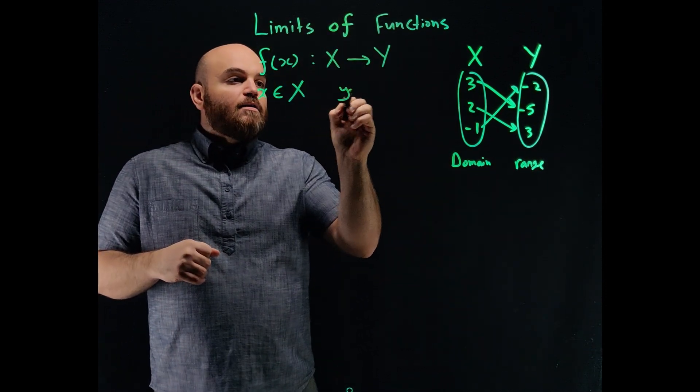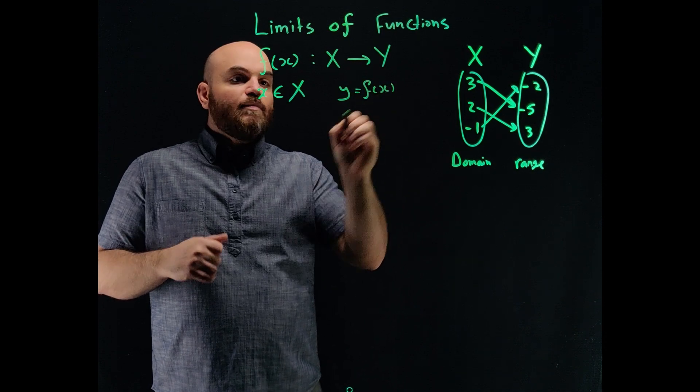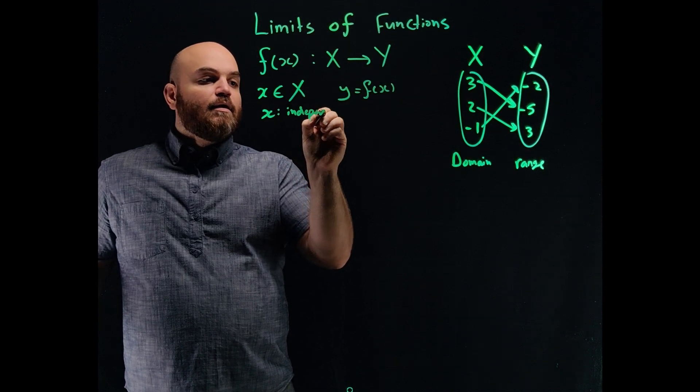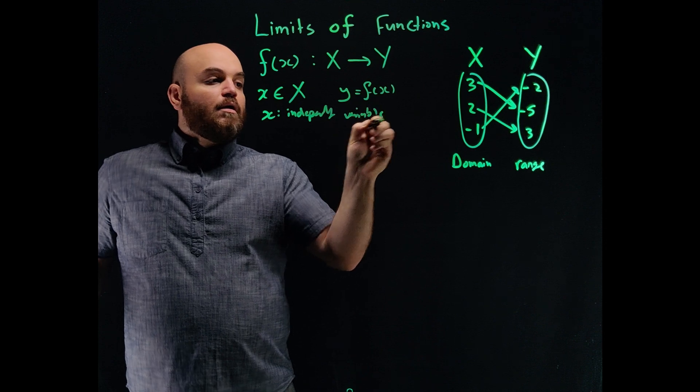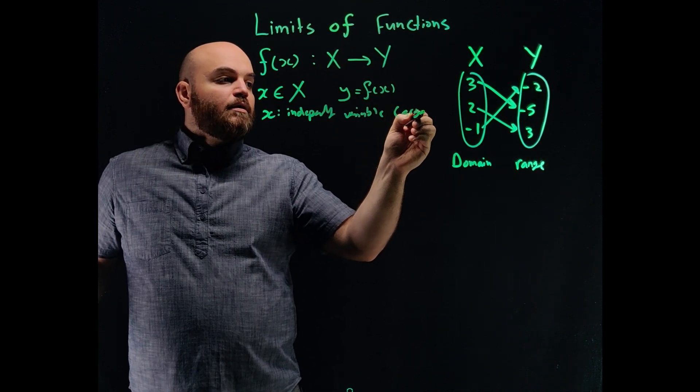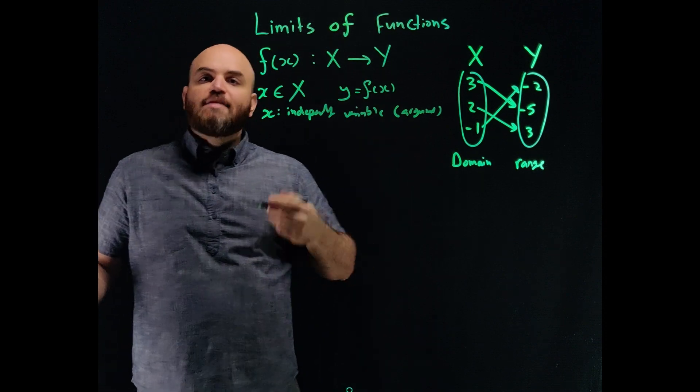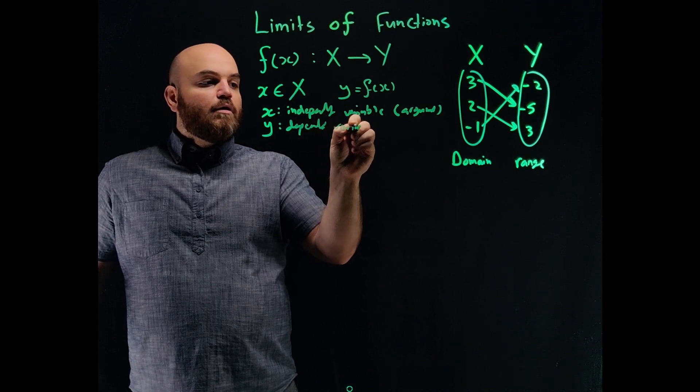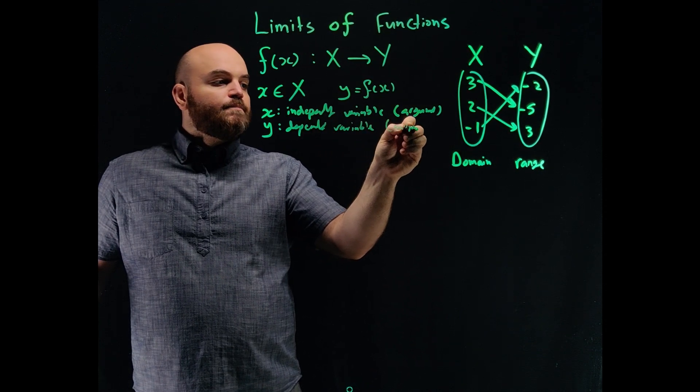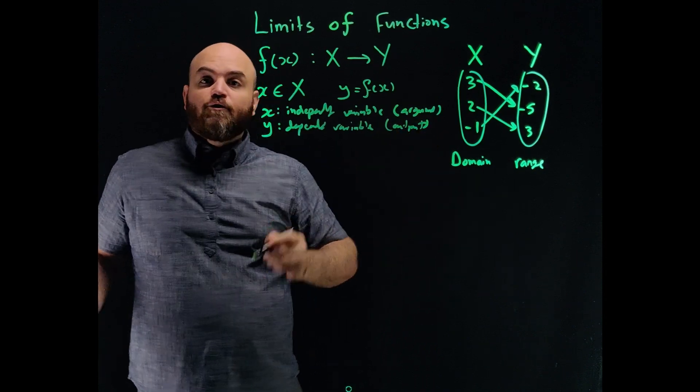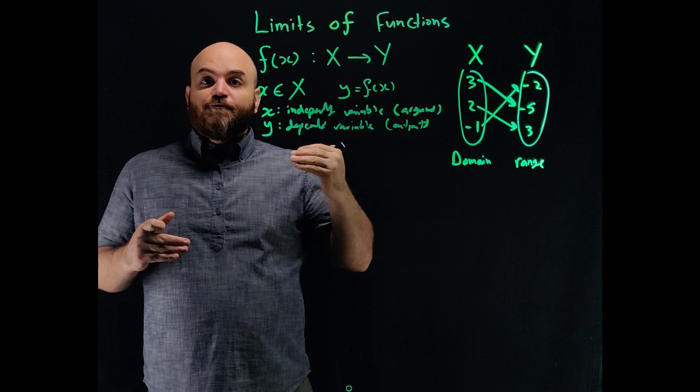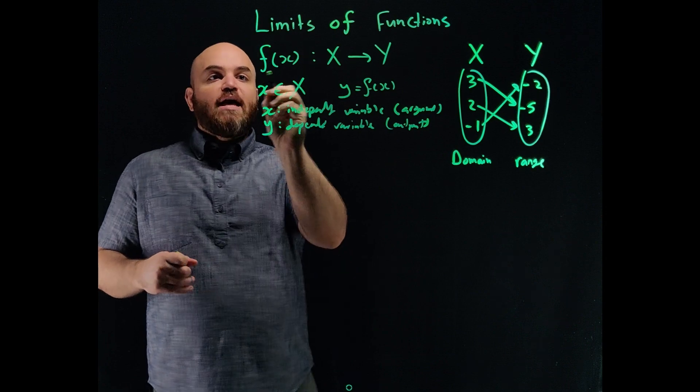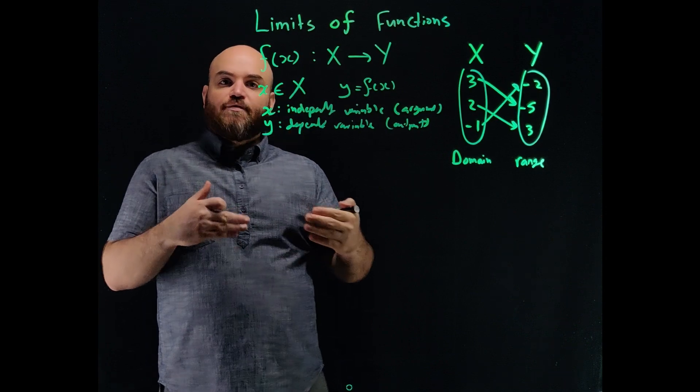These two sets are typically called the domain and the range of the functions. So y here is equal to f of x. Typically, x is referred to as the independent variable, or sometimes the argument of the function. It could also be referred to as the input. Y is the dependent variable, or the output of the function. A function is just a relationship that maps numbers from one set to exactly another number in another set.